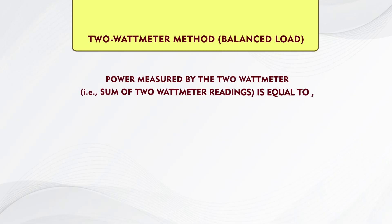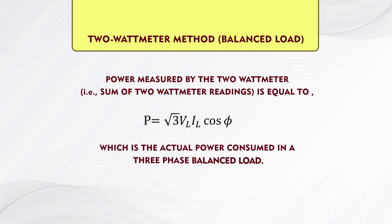Now, the 2-wattmeter method for the balanced load. The 2-wattmeter method can be explained more clearly by considering a balanced load. In this case, we shall prove that the power measured by 2 wattmeters, that is the sum of the 2 wattmeter readings, is equal to P equals root 3 · V_L · I_L · cos φ, where V_L is the line voltage, I_L is the line current, and cos φ is the power factor. This is the actual power consumed in the 3-phase balanced load.